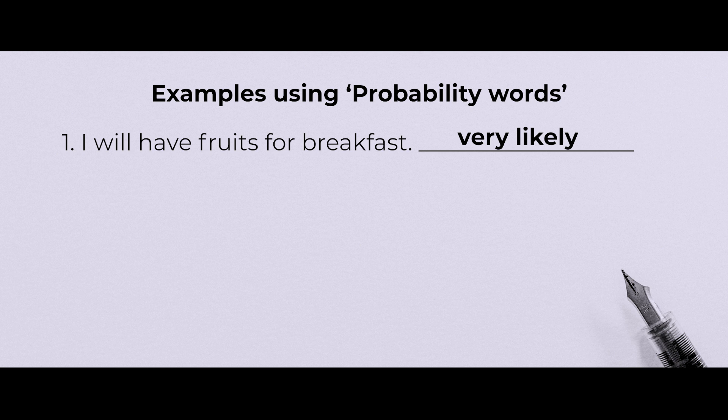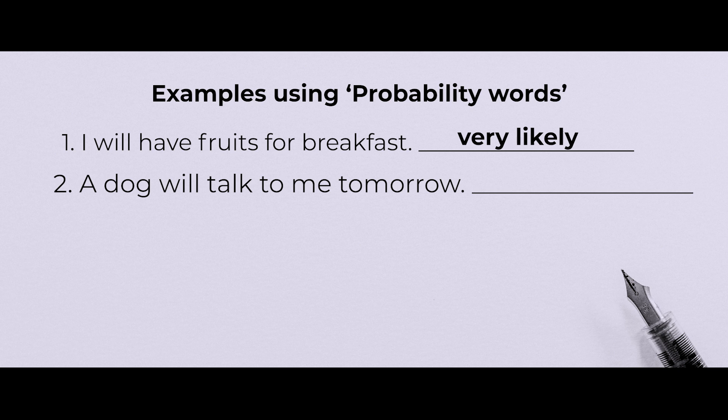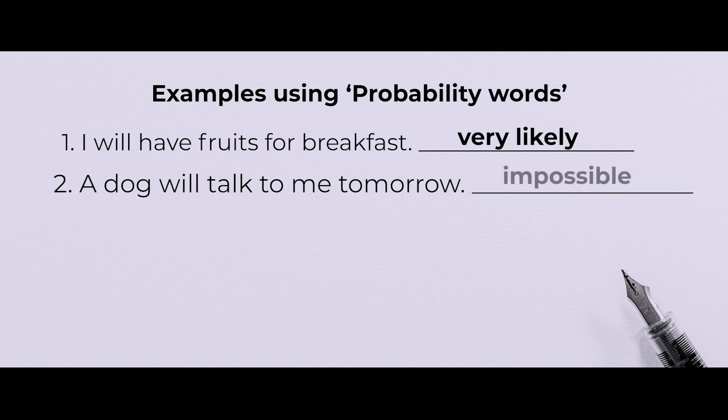That is how probability differs from person to person. Now let's look at the second example: a dog will talk to me tomorrow. What do you think? It is impossible — here it will be impossible for all persons because we never see a dog talking.